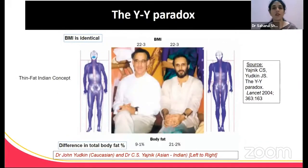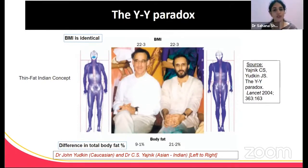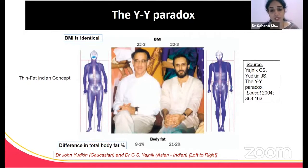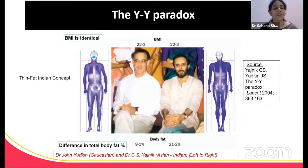We are all aware of this particular picture — this is the YY paradox, featuring Dr. John Utkin and Dr. Yagnik. In this picture, they clearly showed that in spite of having a similar BMI, Dr. John Utkin had a body fat percentage of 9.1%, compared to Dr. Yagnik, an Asian Indian, who had body fat as high as 21%. This shows that in spite of having a similar BMI, you can have a large disparity in body fat, and that despite having a low BMI, patients can have higher adiposity.